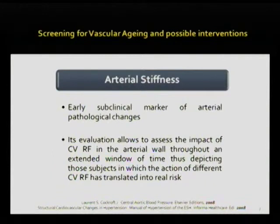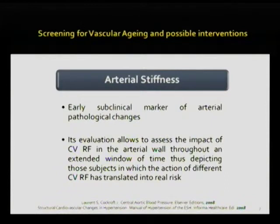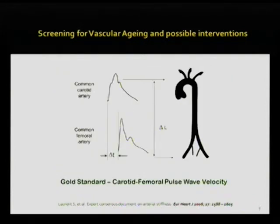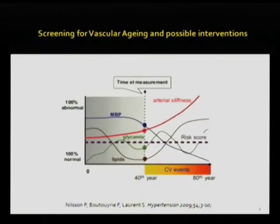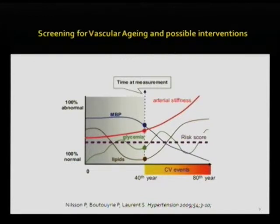Through arterial stiffness as a measurement of subclinical organ damage, we can identify how subjects have been able to cope with their aging process, using pulse wave velocity as the gold standard to measure arterial stiffness. Arterial stiffness and pulse wave velocity give us not a snapshot of how different subjects have been exposed to cardiovascular risk factor levels, but instead how in time they have been reacting to this exposure — not only to known traditional risk factors, but also to unknown insults, whether metabolical, mechanical, or of oxidative stress nature.